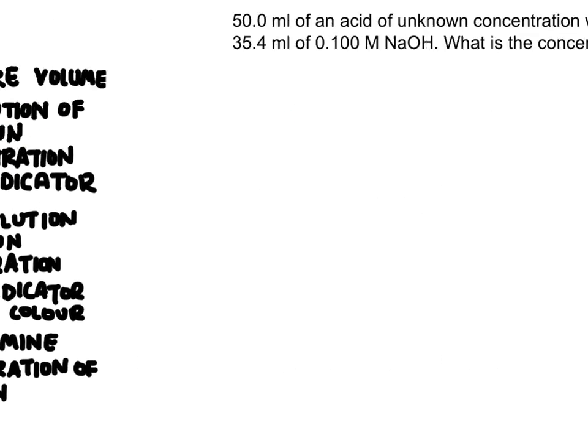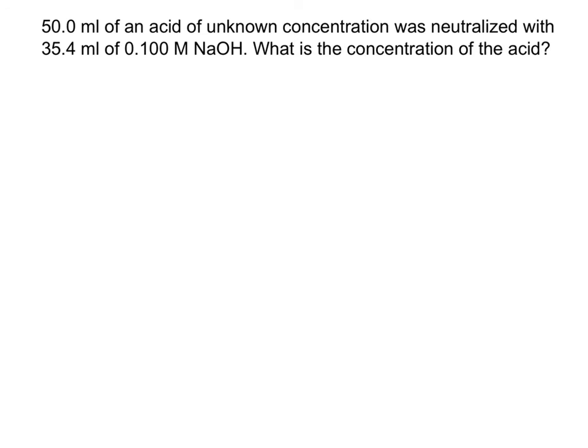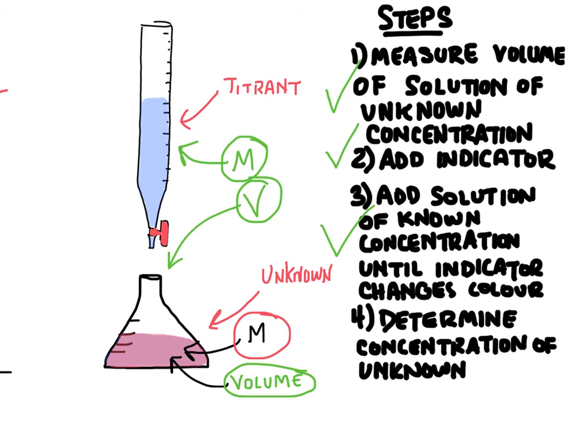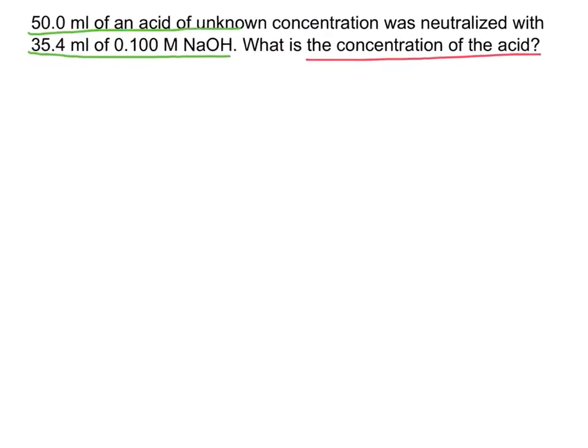So let's try an example. So this problem says 50 milliliters of an acid of unknown concentration was neutralized with 35.4 milliliters of 0.1 molar NaOH. It says, what is the concentration of the acid? So this is the same situation that we're looking at here. Here's our acid. And in this case, we have 50 mils of this acid right here. And we've added 35.4 milliliters of this base.